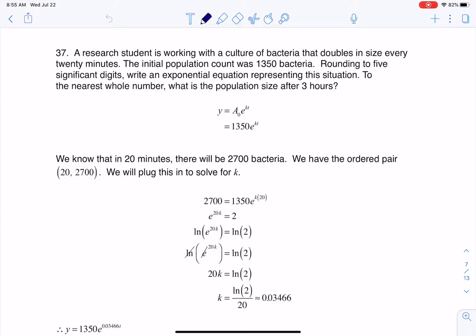Hey Math 31, I had a question coming out of section 6.7, number 37. Here we were told that we've got a research student who's working with bacteria, and we see that this culture doubles in size every 20 minutes. So I'm going to highlight that. That's going to be important. We also see that the initial population was 1,350 bacteria, and it says rounding to five significant digits, write an exponential equation representing this situation, and then figure out what is the bacteria population after three hours.